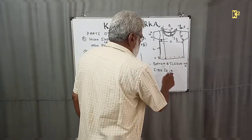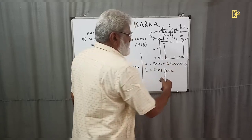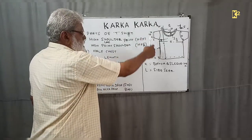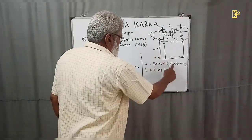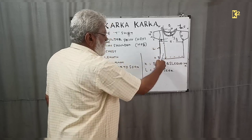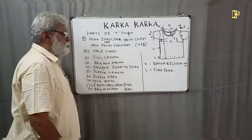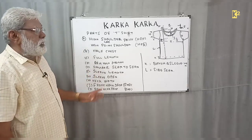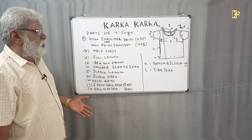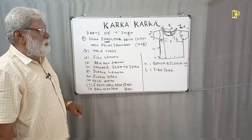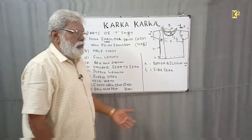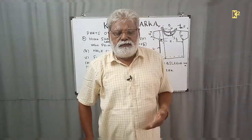Point K refers to the bottom and sleeve hem. Hemming means folding and stitching at the bottom and also folding and stitching the sleeve hem. Side seam is where we join the front panel and the back panel — that part is called the side seam. With these common measurements we can proceed further for the pattern, piece weight, or costing. You must understand the parts of the garment before proceeding to any analysis.